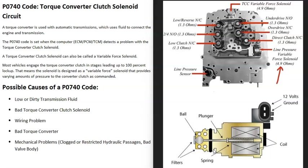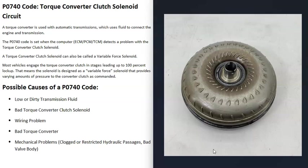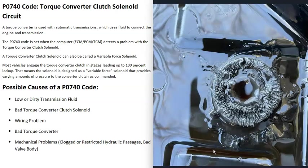Another cause is a bad torque converter itself. Every single time I've personally gotten this P0740 code, it's actually been a bad torque converter — which is a bit strange since the code definition says 'solenoid circuit.' There are YouTube videos on testing the torque converter. If you drain the fluid and find a lot of metal shavings in the filter, the torque converter is likely having issues and you should do more testing on it.